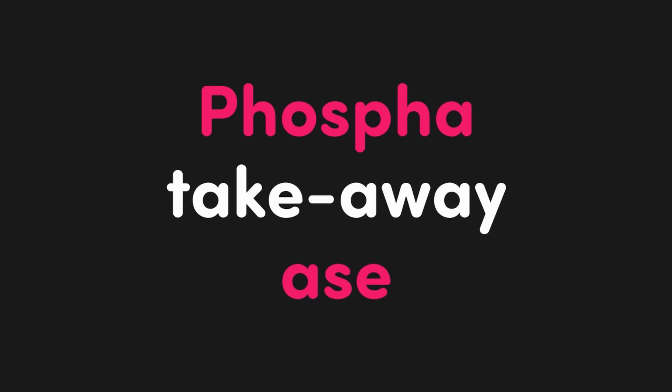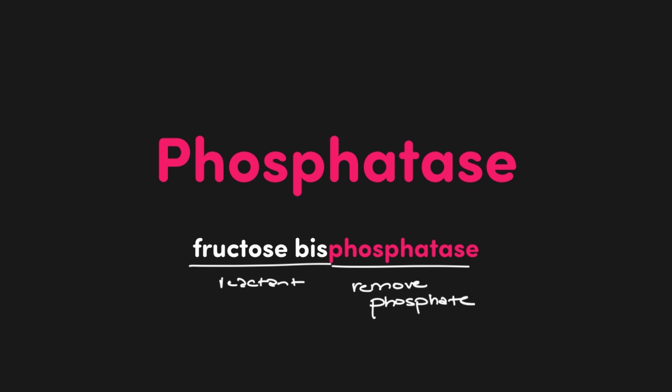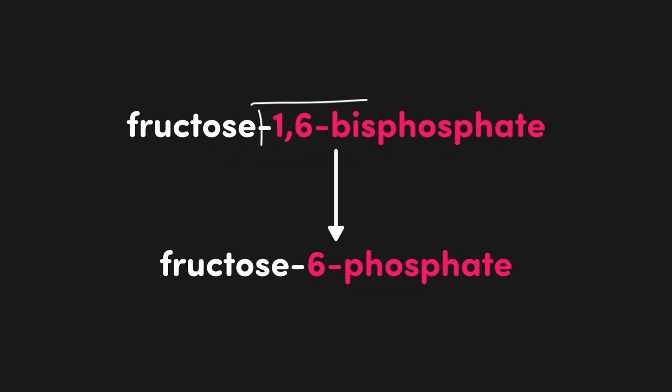Now let's move on to the last phosphate-involved enzyme: the phosphatase, or as I call it, the phosphatakeaway, because that's what it does — it takes away phosphates. For example, with fructose bisphosphatase, I would expect it to have a fructose bis-phosphate and take one of its phosphates away. That's exactly what we see: we go from fructose 1,6-bisphosphate to fructose 6-phosphate, removing one of those phosphates.